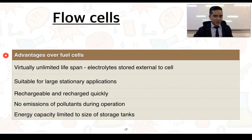To summarize this, the advantages that flow cells have over fuel cells is that they virtually have an unlimited lifespan. And as mentioned before, the electrolytes can be stored externally to the cell. They can be stored underground in storage tanks. They are suitable for large stationary applications. So if we want to look at large-scale electricity production, it's possible with flow cells, but not necessarily fuel cells. Flow cells are rechargeable and they can be recharged quickly just by pumping the electrolytes in the opposite direction. There are no emissions of pollutants or byproducts during their operation. So everything is essentially contained within the flow cell. And the energy capacity of these flow cells is limited to the size of the storage tanks. So there are definitely some key advantages of flow cells over fuel cells, and they are fairly recent development. So it will be interesting to see where flow cells may actually lead us in the future.